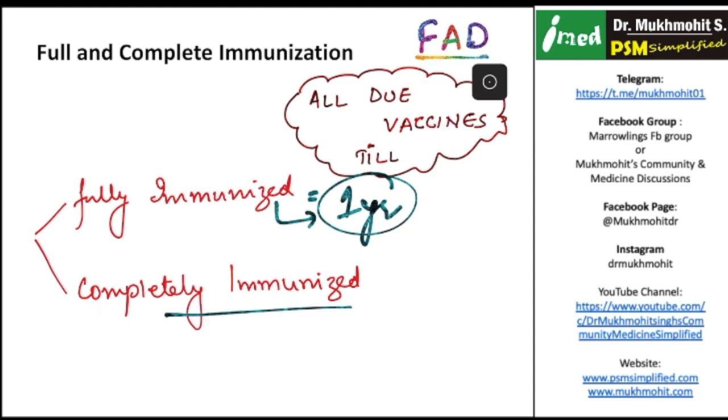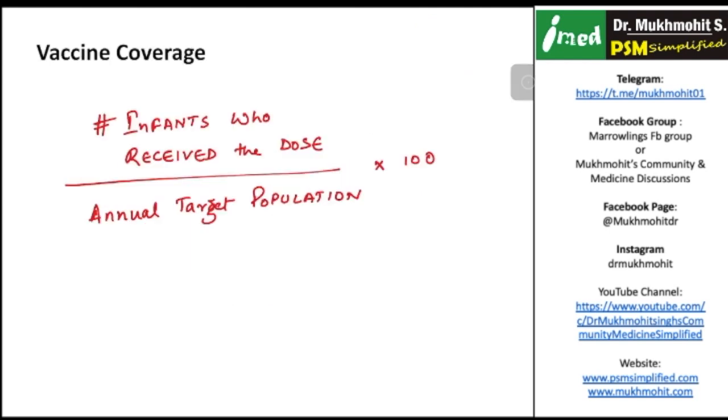Point number two: how do we calculate the vaccine coverage? Vaccine coverage is given by a simple formula: the total number of infants who receive the dose in a particular year divided by the annual target population into 100. This formula might look really simple and straightforward to you.